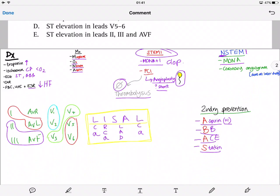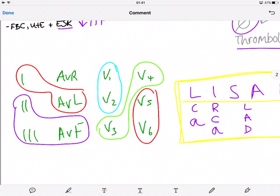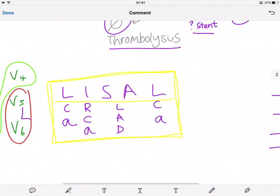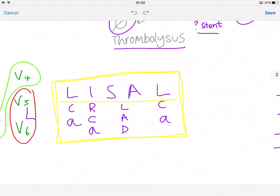A mnemonic I like to use - I've made a video about this - is to write all the leads down and circle them. Lead 1 and AVL are lateral leads. Leads 2, 3, and AVF are inferior leads. V1 and V2 are septal leads. V3 and V4 are anterior leads. V5 and V6 are lateral leads again.